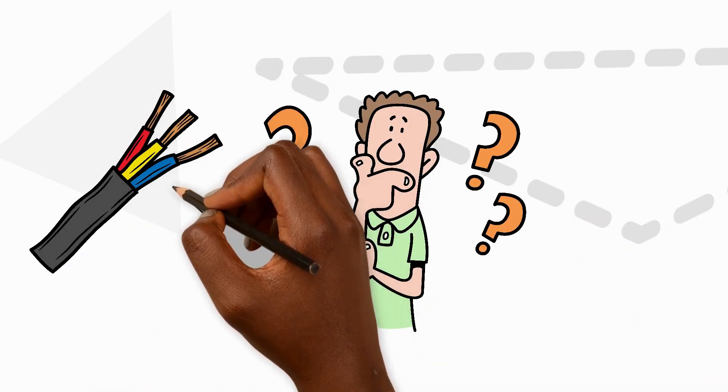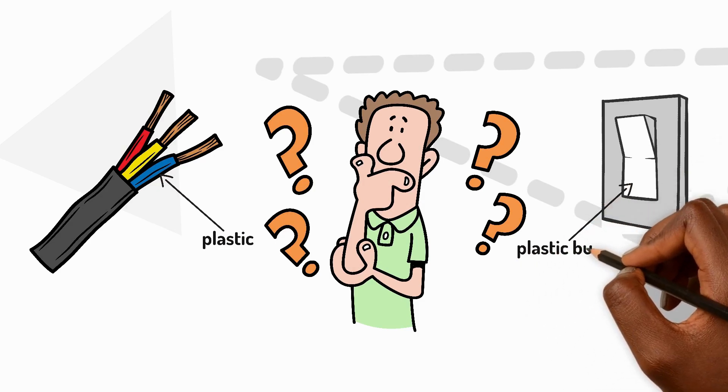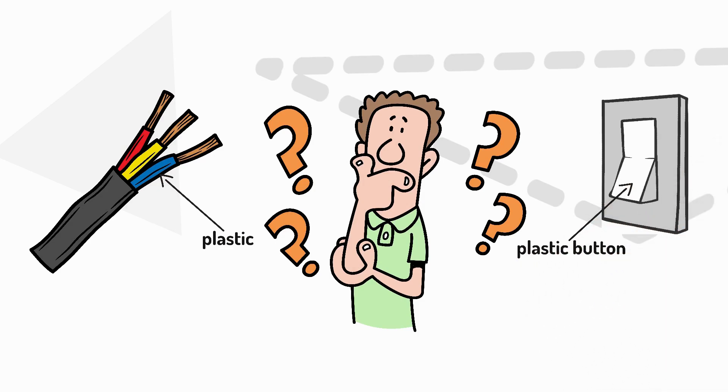Why do electrical wires have plastic around them? Why are switches made of metal and plastic buttons? In this video, we'll discover which materials let electricity pass through them and which ones stop it.